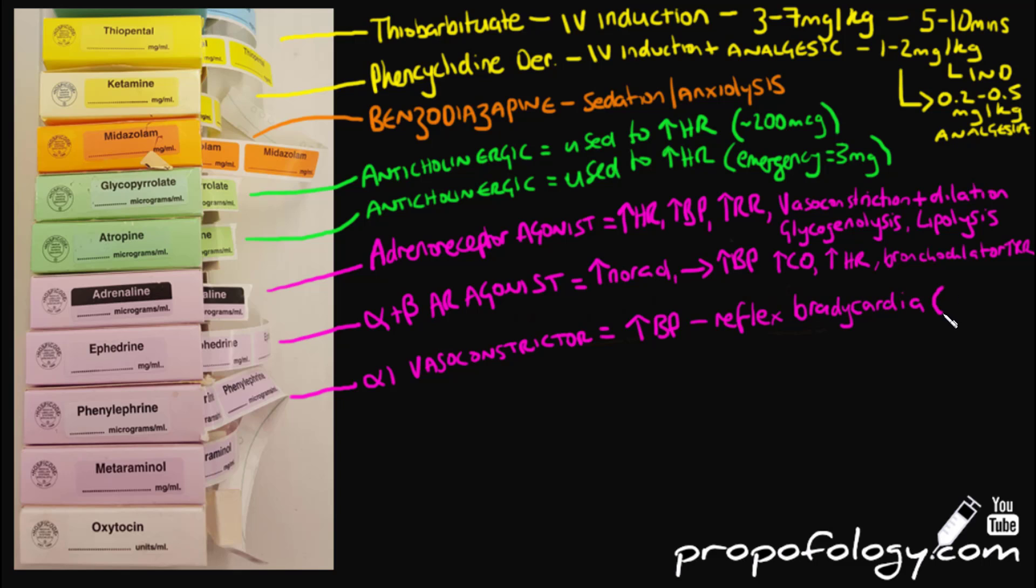Metaraminol is a potent sympathomimetic amine. It gives direct stimulation of the alpha 1 and some beta receptors. The alpha effects predominate however. It will increase your systemic vascular resistance, increase your blood pressure, increase your coronary artery blood flow, increase your pulmonary artery pressure and your pulmonary vascular resistance. It will also increase your respiratory rate and your tidal volumes.